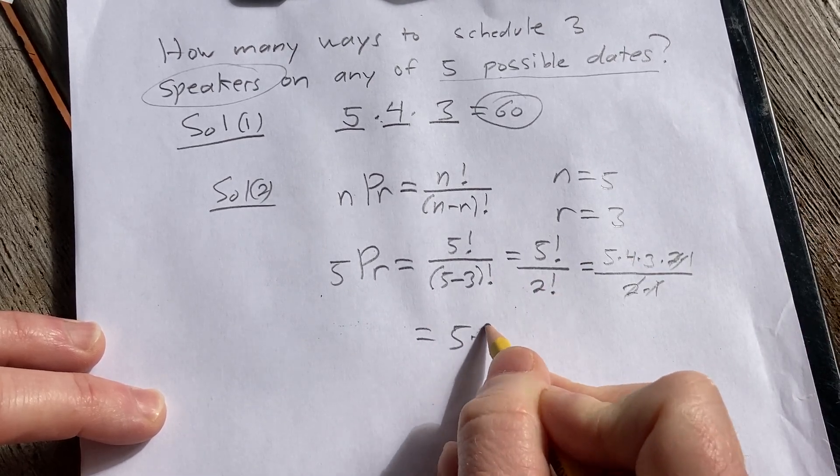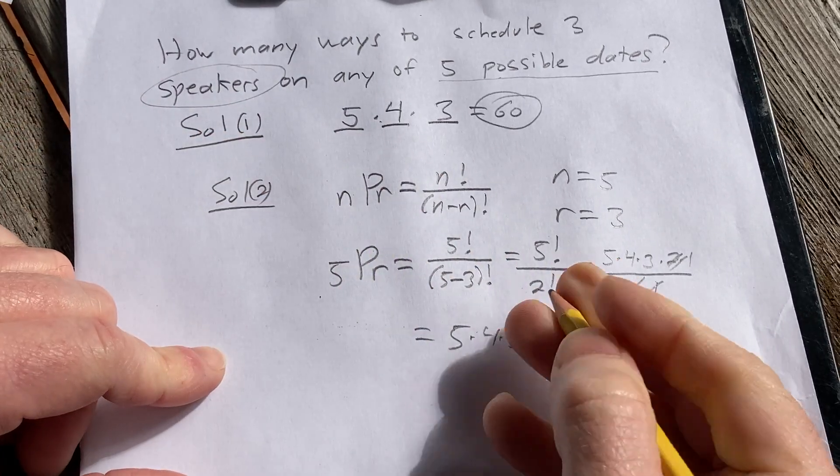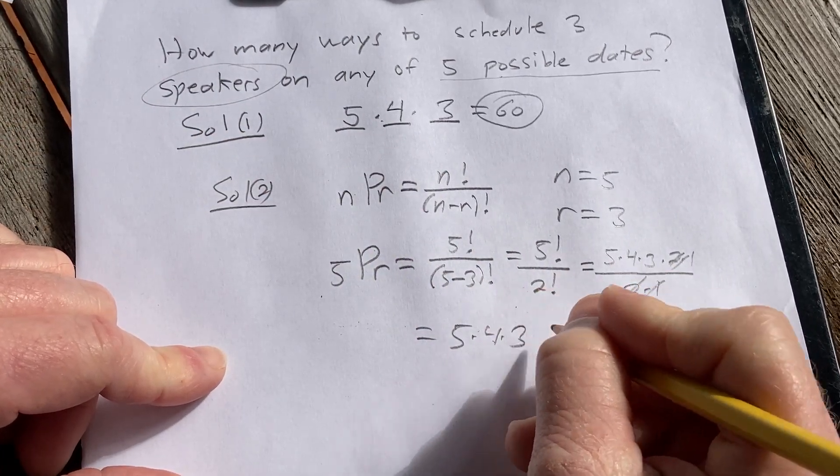So we end up with 5 times 4 times 3, which is the same thing we had in solution 1, and that's going to give us 20 times 3, which is 60.